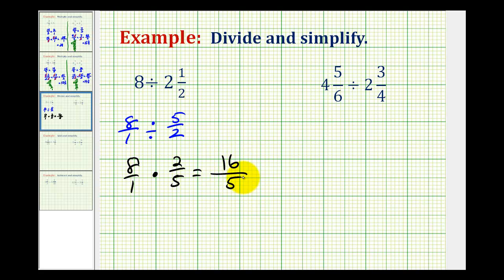This is a simplified fraction, because there are no common factors between 16 and 5, but let's also show how we can rewrite this as a mixed number. A fraction bar means division, so this would be 16 divided by 5. Well there are 3 fives in 16, 3 times 5 is equal to 15. We have a remainder of 1, so 16 fifths is equal to 3 and 1 fifth. We put the remainder over the divisor.